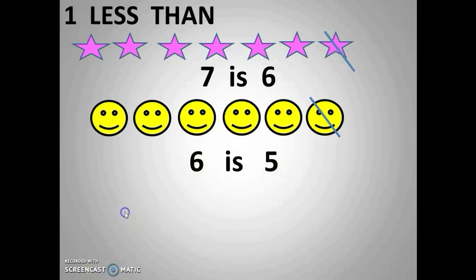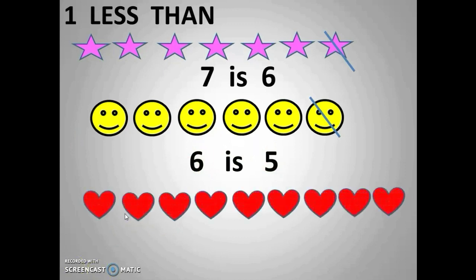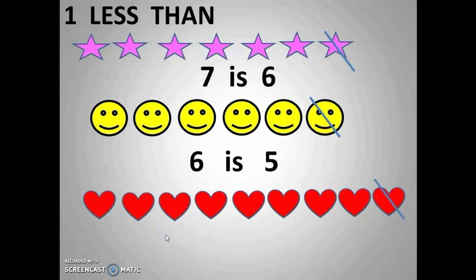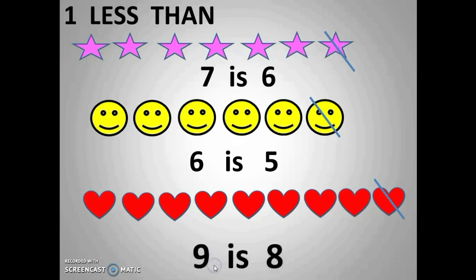Next example: let's count — one, two, three, four, five, six, seven, eight, nine — nine are there. Out of nine I am going to cut one. When I cut one, how many will be there? One, two, three, four, five, six, seven, eight — eight should be there. Out of nine, eight is there. So before nine it is eight, before seven it is six, before six it is five.